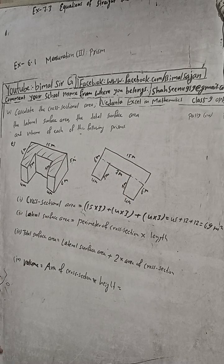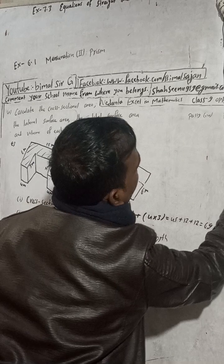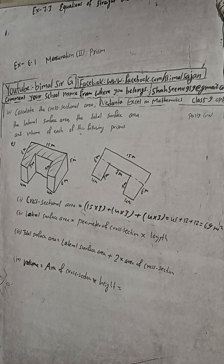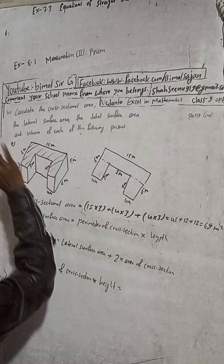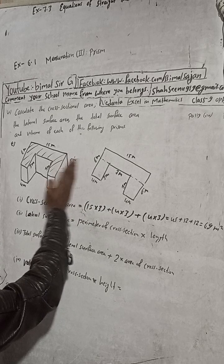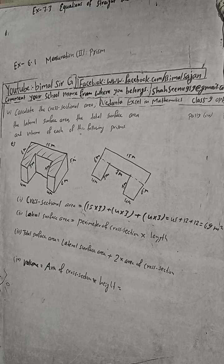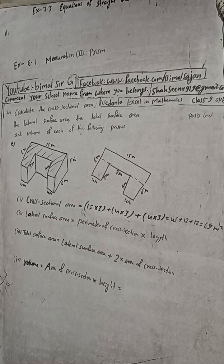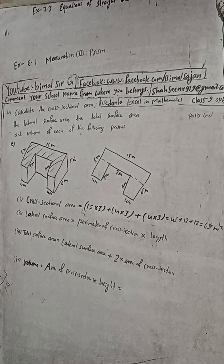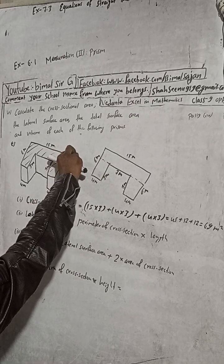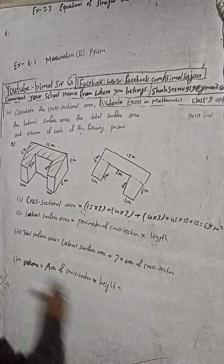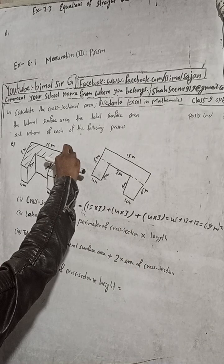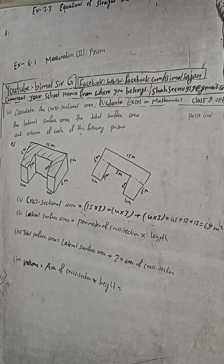The cross-sectional area is 69 square meters, which matches the answer in the book. Now for part two, the lateral surface area. Lateral surface area means not the cross-sectional front part or the back part, but the sides. The formula is: perimeter of cross-section into length. This length is the thickness or height of the object, which is 5 meters.